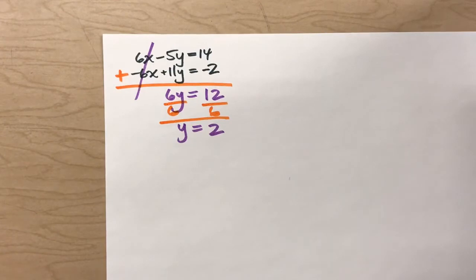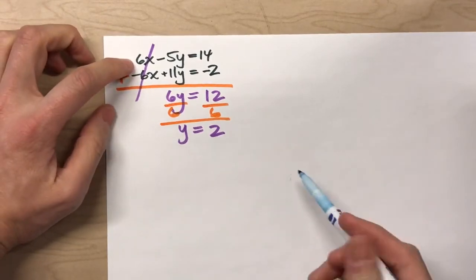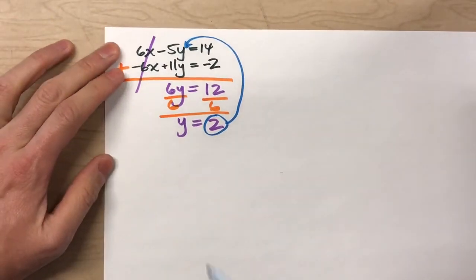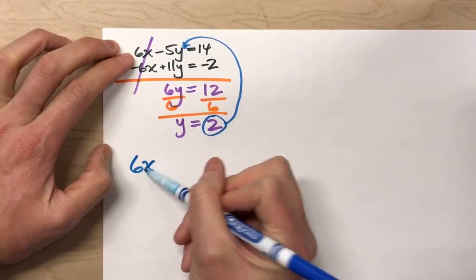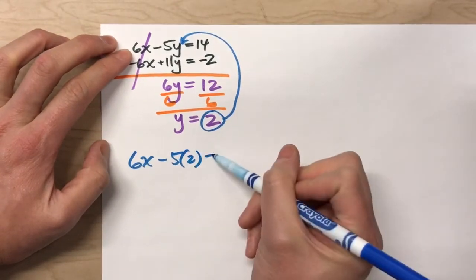Now, to figure out what x is, I'm going to have to take 2 and put it back into one of the original equations to figure out what x is. So, I'll take it, I'm going to put it in the first one. I've got 6x minus 5 times whatever y is, in this case it's 2, equals 14.